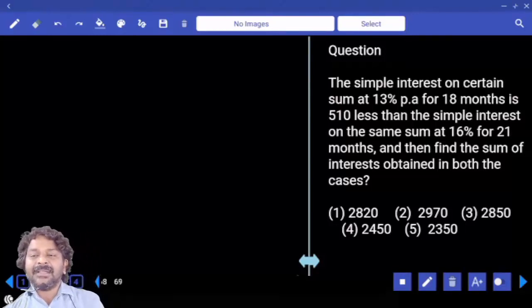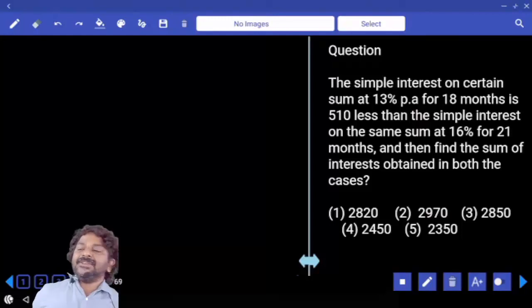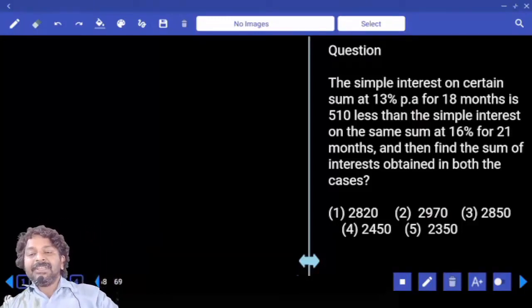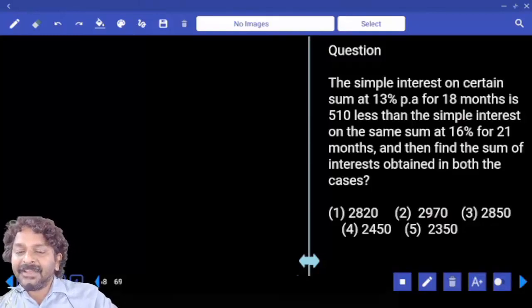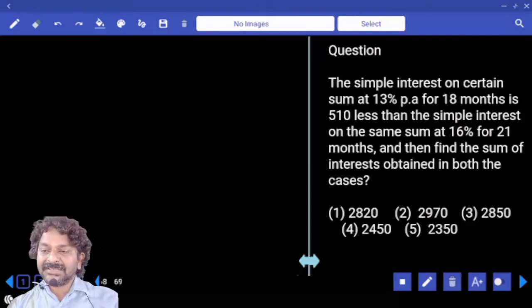Simple interest on a certain sum at 13% per annum for 18 months is 510 less than simple interest on the same sum at 16% for 21 months. And then find the sum of interest obtained in both cases.